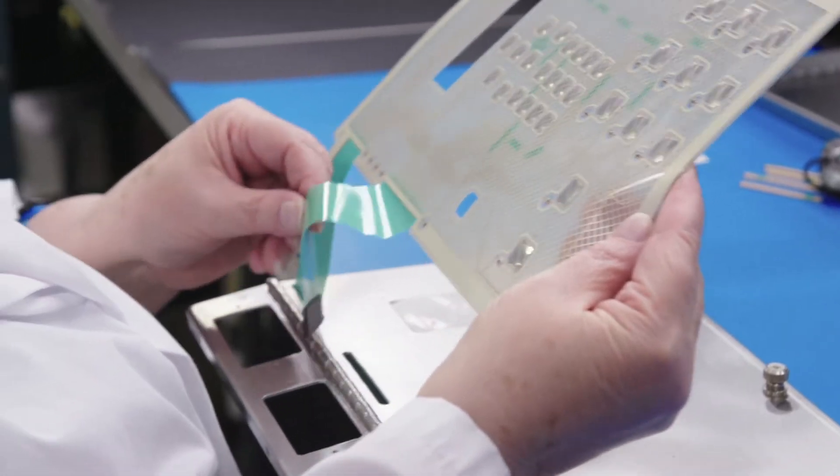The first step of the assembly process is to remove the release liner that covers the pressure-sensitive adhesive on the back of the entire assembly.